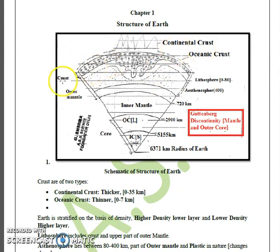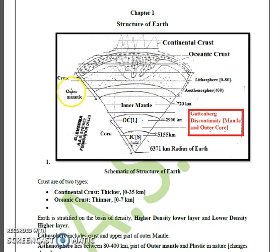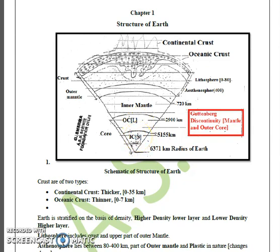The crust can be divided into two types: continental crust and oceanic crust. Following the crust is the mantle, which also has two parts — outer mantle and inner mantle. Moving towards the core, at the center of Earth we have two types of core: outer core, which is liquid in nature, and inner core, which is solid in nature.